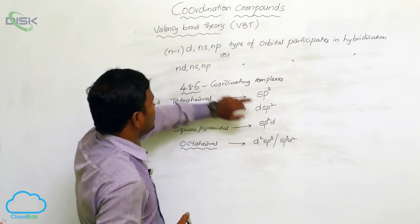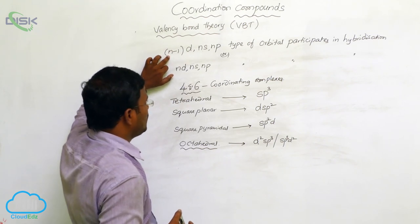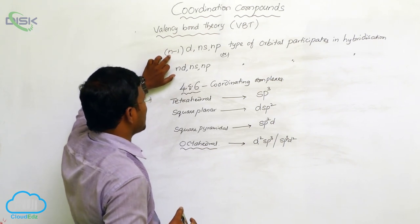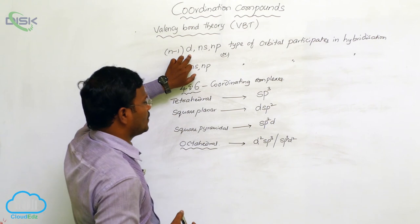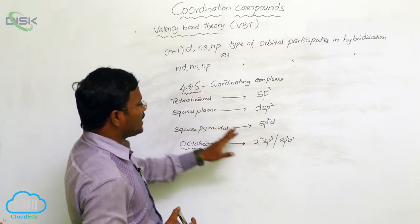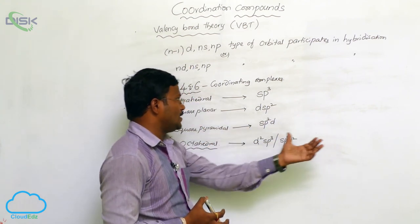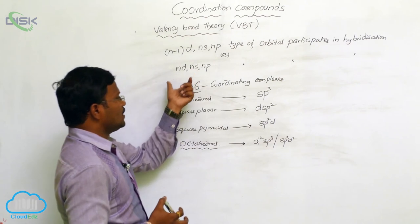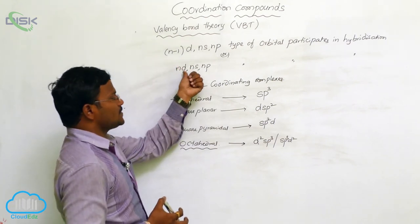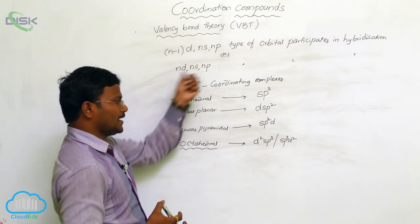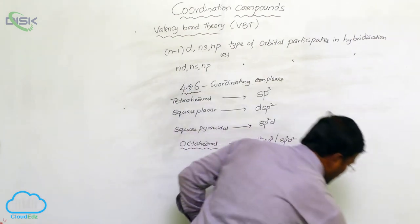Remember: if d is presented before s in the hybridization notation, that is the inner sphere orbital — the (n-1)d orbital. If d is presented after completion of s and p, then it is the valency orbit, represented as nd. This is the summary of Valency Bond Theory.